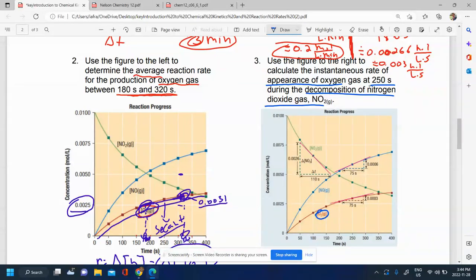and we want to know what the instantaneous rate is at 250 seconds. So we find what that is on the curve right here. There's our 250 seconds on the curve.